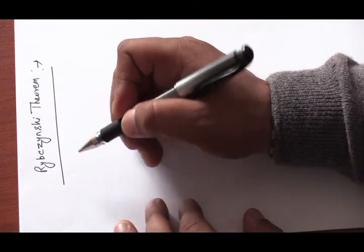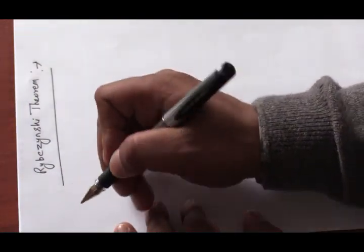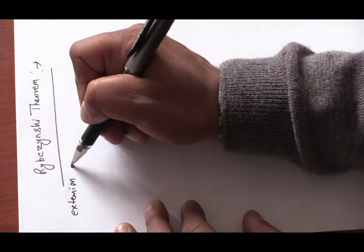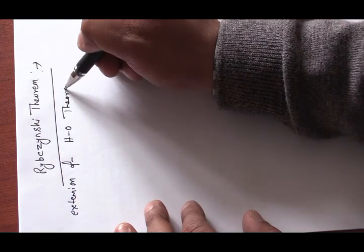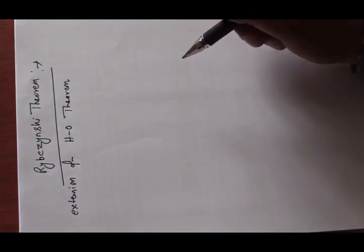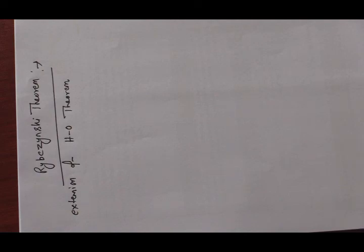The Rybczynski theorem is an extension of the Heckscher-Ohlin theorem. It states that if there is an increase in the endowment of one factor, keeping another factor unchanged in a Heckscher-Ohlin framework, the production of the commodity that uses this factor more intensively will increase. The rate of increase in production of that commodity will be more than the increase in factor endowment, and there will be a decline in production of the other commodity.